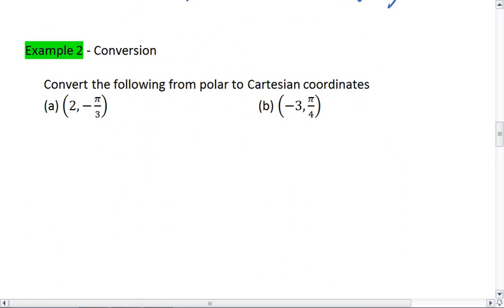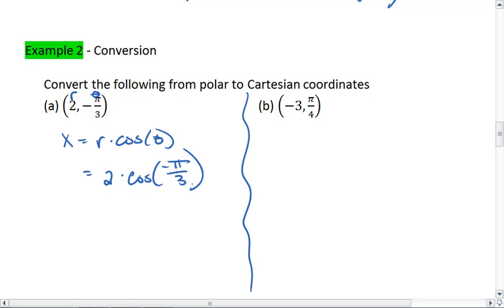So I go down here for the first one. This is r, this is theta, so x equals r times cosine theta means x equals 2 times cosine of negative pi-thirds. We use our unit circle, we get 2 times the cosine of negative pi-thirds is going to be 1 half, which equals 1.